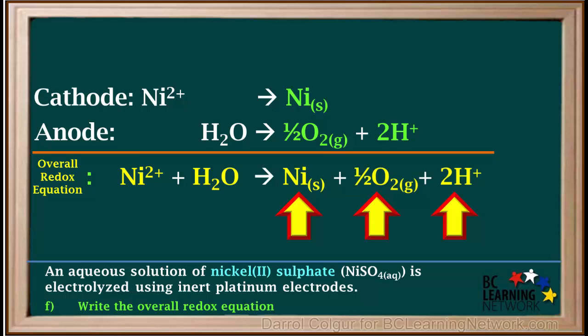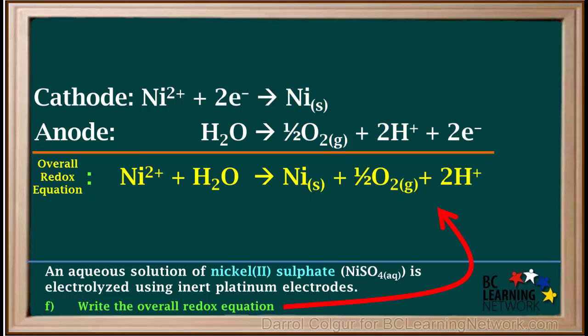On the left side we have 1 Ni2+ and 1 H2O. And on the right side we have 1 Ni solid, ½O2 gas, and 2 H+ ions. So now we have the overall redox equation and we've answered question F.